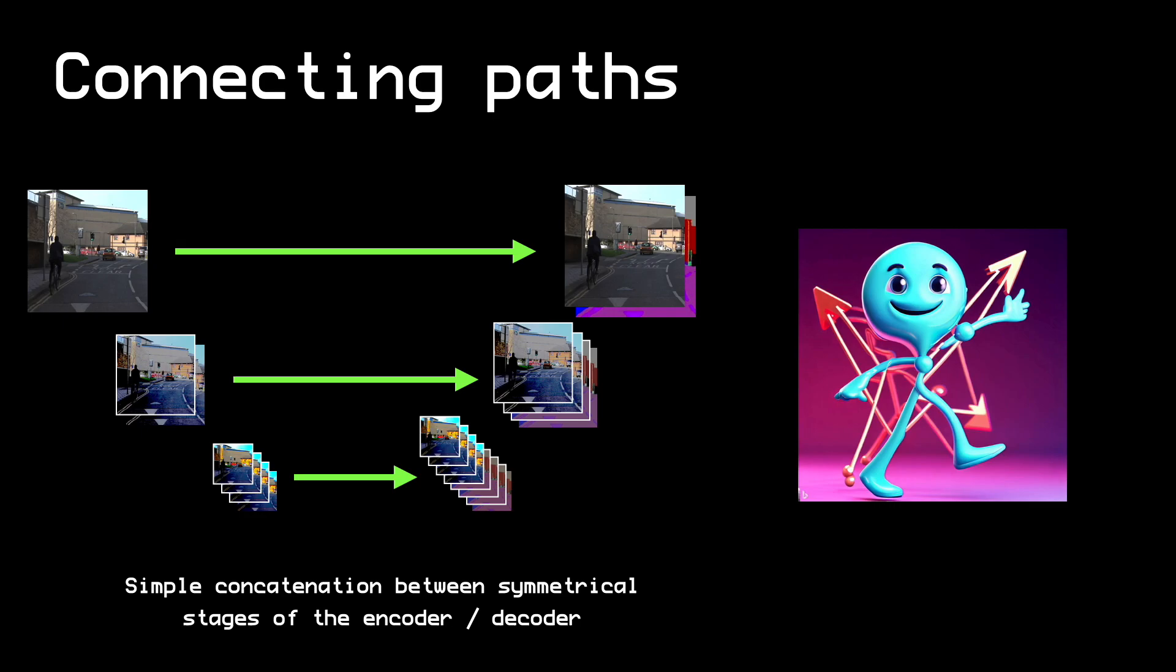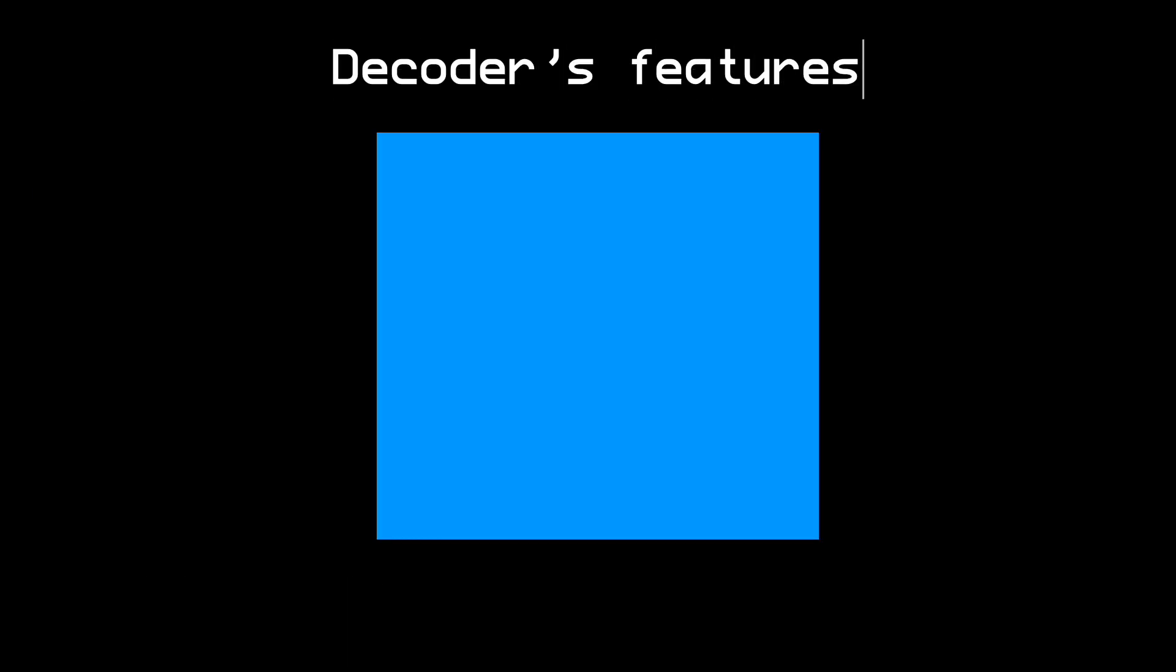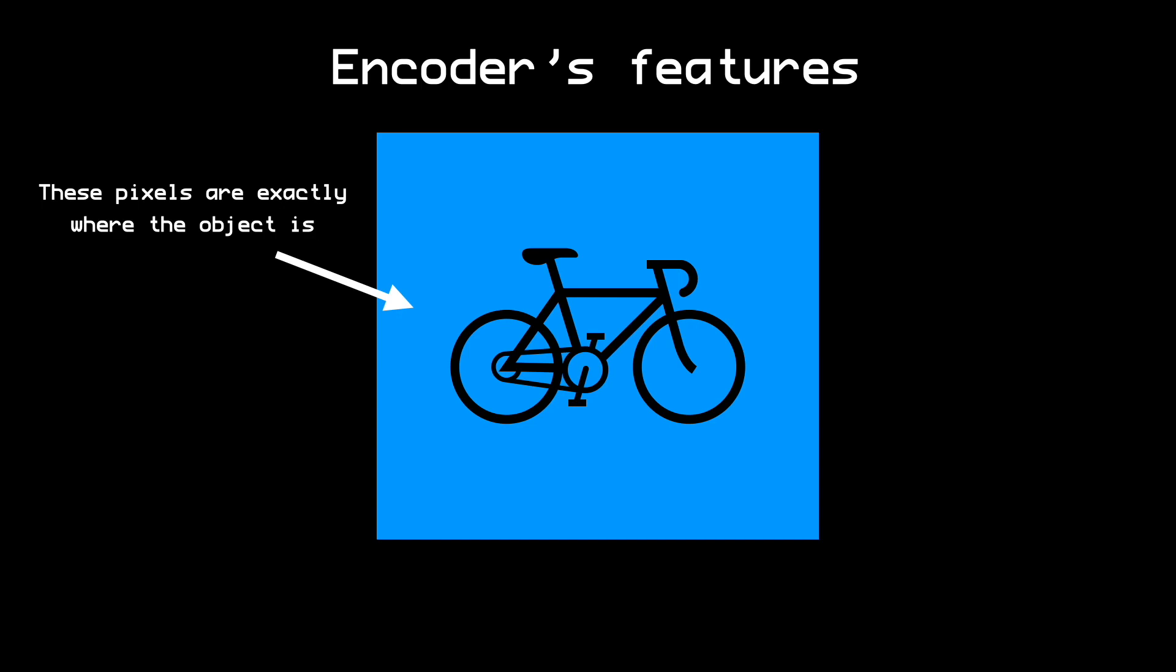The intuition here is that the decoded features might include more semantic information such as 'this area is a bike,' whereas the encoded features contain more spatial information such as 'these are the pixels where the object is.' When you combine both the decoded and the encoded features together, you can see how you can get pixel-perfect segmentation.